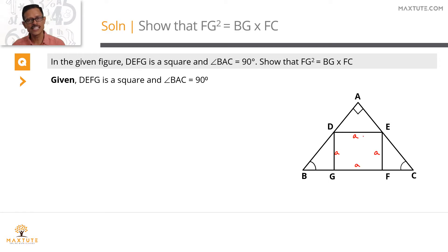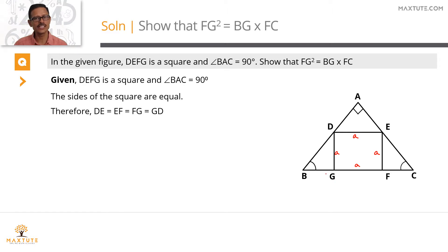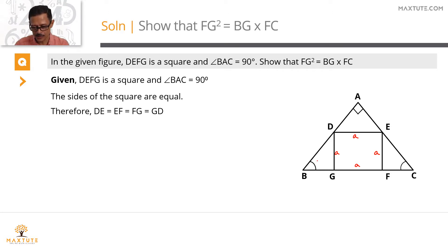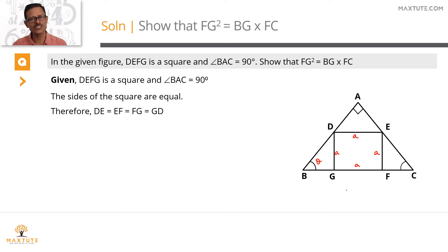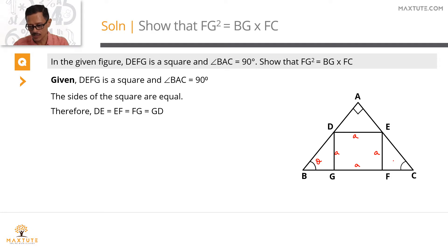Because it's a square, all sides are equal to A. Since angle BAC is a right angle equal to 90 degrees, let's assign angle ABC = θ. The sum of interior angles of a triangle equals 180 degrees, so 90 + angle ABC + angle ACB = 180, which means angle ABC + angle ACB = 90. Therefore angle ACB = 90 − θ.